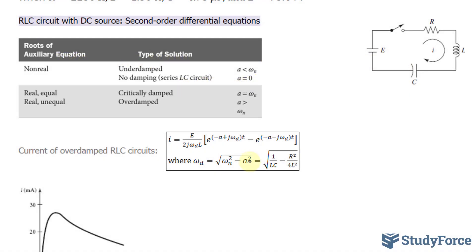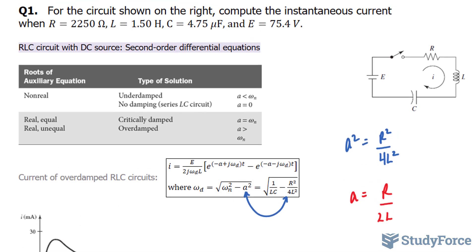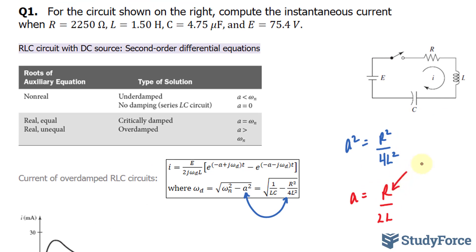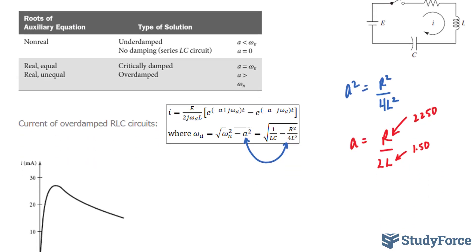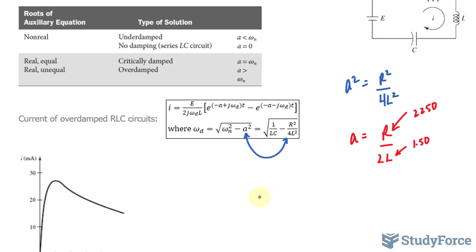Let's start by finding out what A is equal to. Notice that A squared is equal to R squared over 4L squared. If I square root both sides, I end up with A is equal to capital R over 2L. I'll substitute what R is equal to, and they tell us that it's 2250.